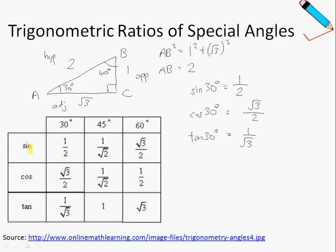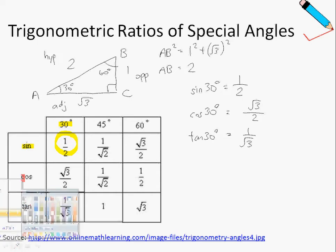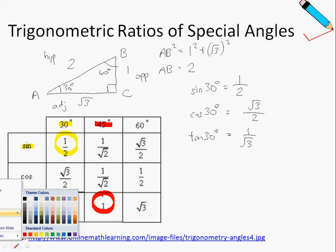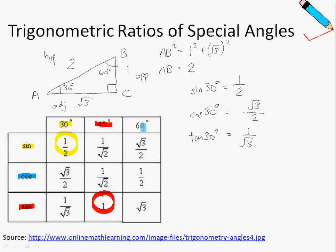You can see that this coincides with our table. So how do we read off this table? For example, if I want the sine of 30 degrees, it would just be one half. The tangent of 45 degrees is just 1. And the cosine of 60 degrees is just one half. That's how you make use of this table.